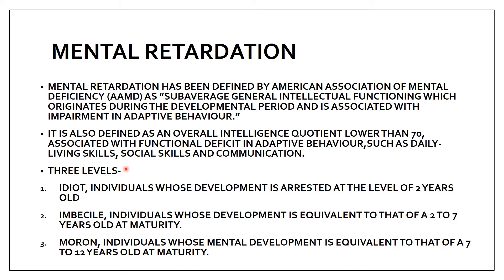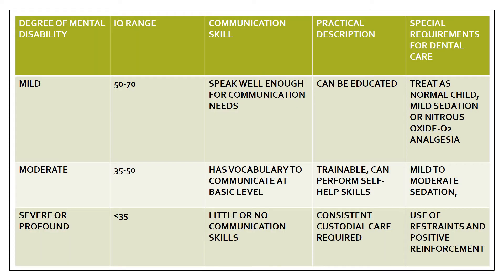There are three traditional levels of mental retardation. First is idiot — individuals whose development is arrested at the level of a two-year-old. Second is imbecile — development equivalent to two to seven years, even at maturity. Third is moron — mental development equivalent to seven to twelve years of age, even at maturity.